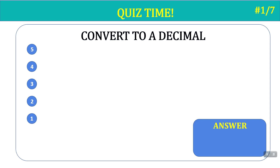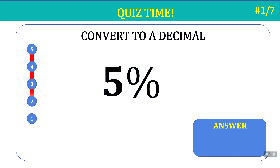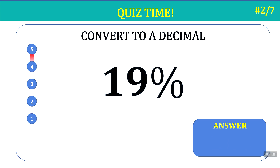Now it's quiz time. Convert the following to a decimal. You have five seconds to answer. Five percent. Time's up — five percent is 0.05. Five percent is not 0.5, because we have to move the decimal two places to the left, and when we place zeros in, we have 0.05. Here's number two: 19 percent. Time's up — 0.19. That was easy.